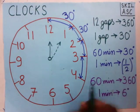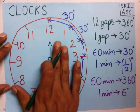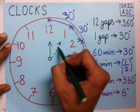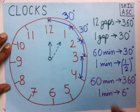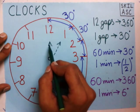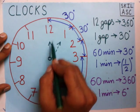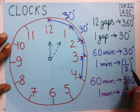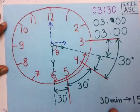Suppose this is an hour hand present at 12 o'clock. In 60 minutes, this hour hand will go from 12 to 1, and we know the gap between 12 and 1 is 30 degrees. So in 60 minutes, this hour hand is covering 30 degrees. Therefore, in 1 minute, the hour hand covers half a degree. So we come back to our question.